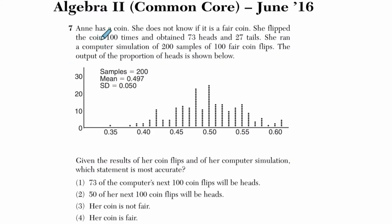Alright, so it says here that Anne has a coin. She does not know if it is a fair coin. She flipped the coin a hundred times and obtained 73 heads and 27 tails.